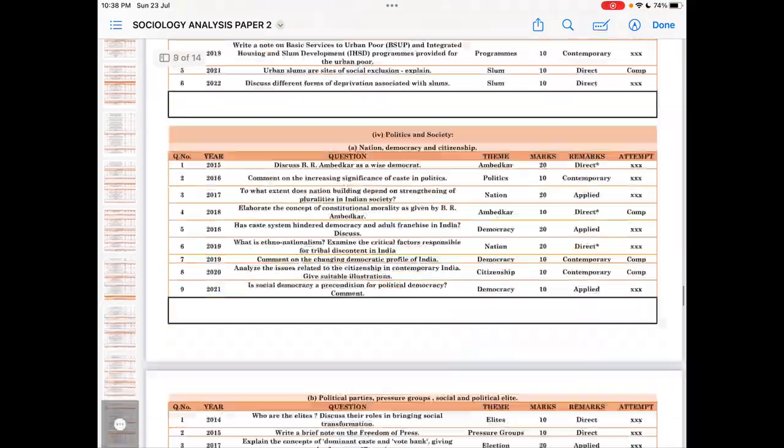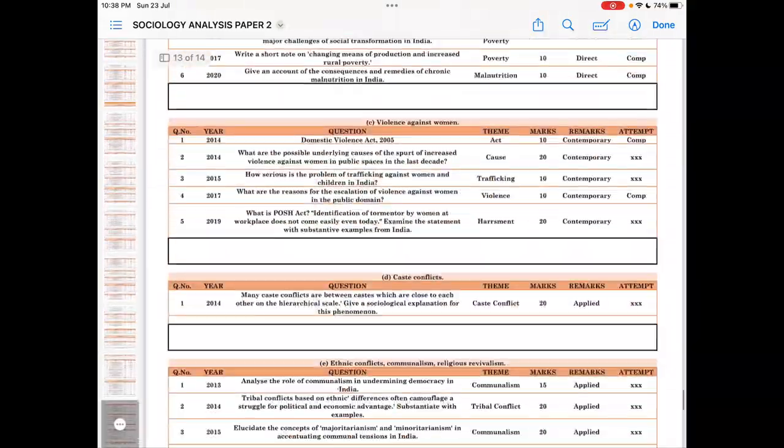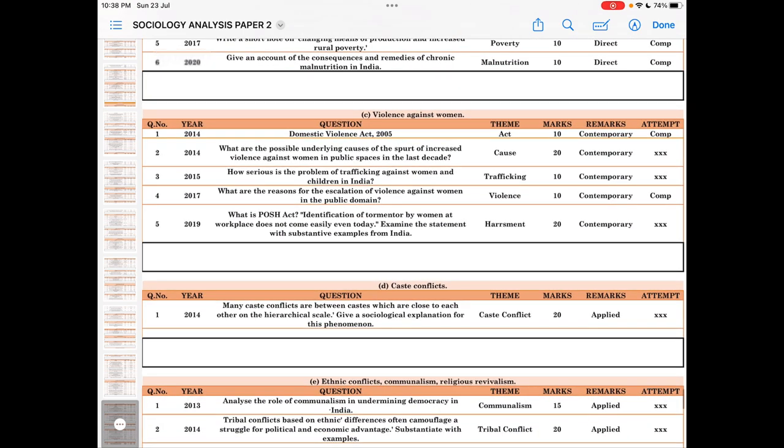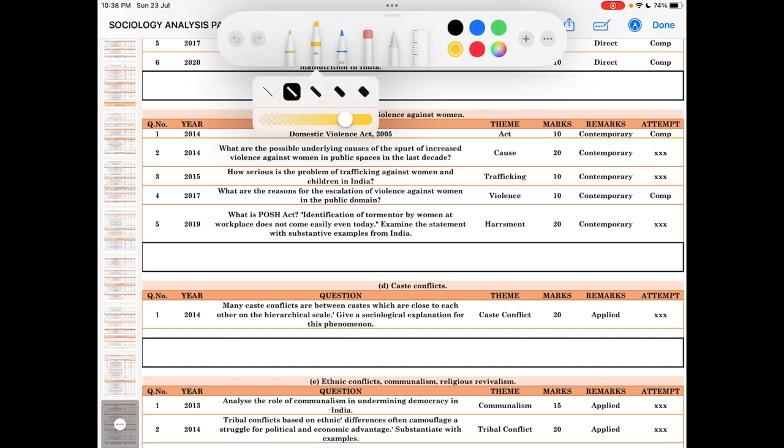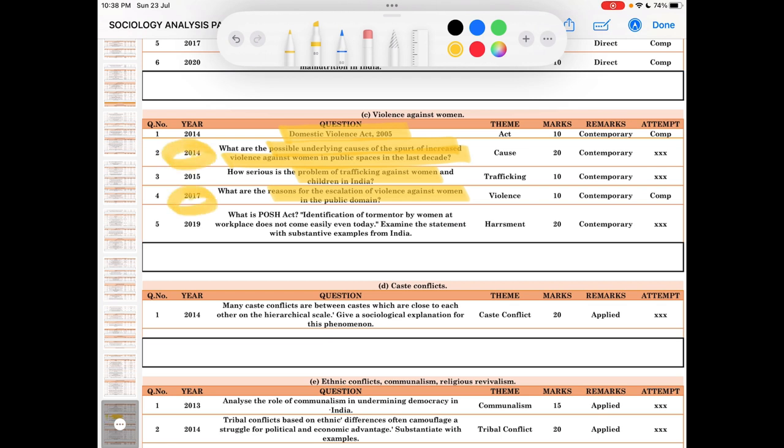As you may see, there have been questions on domestic violence act and its evaluation, possible causes of the spurt of increased violence against women in public spaces, the problem of trafficking, reasons for the escalation of violence against women in the public domain. Interestingly, the 2017 question is an outright repetition of the 2014 question.